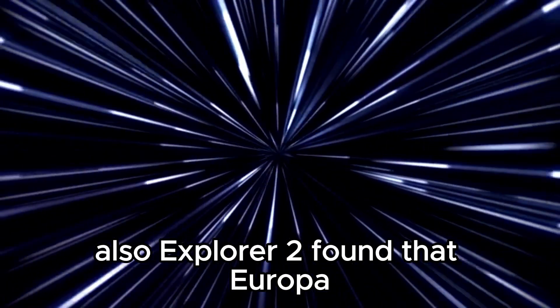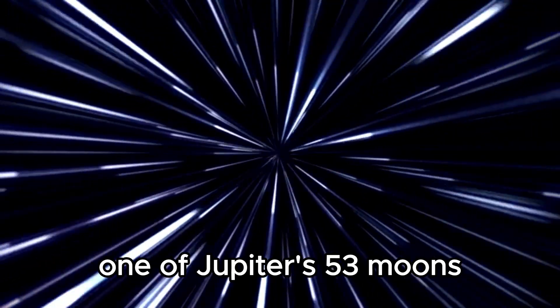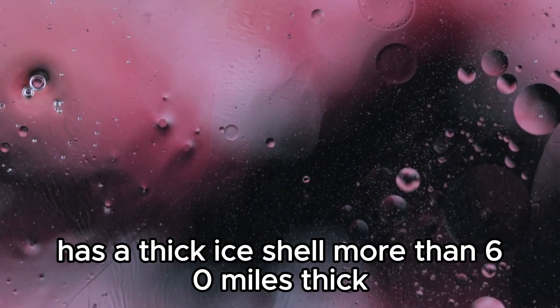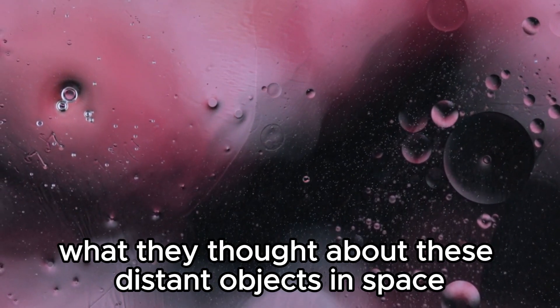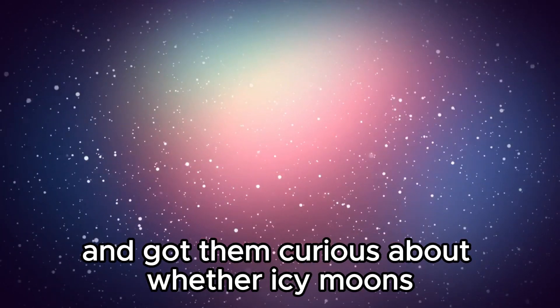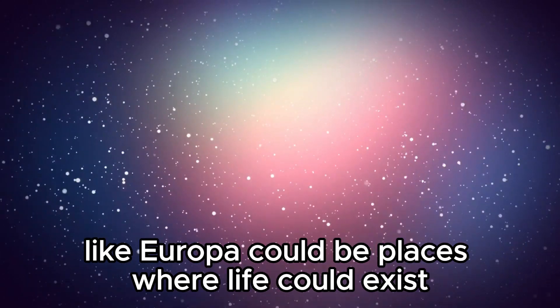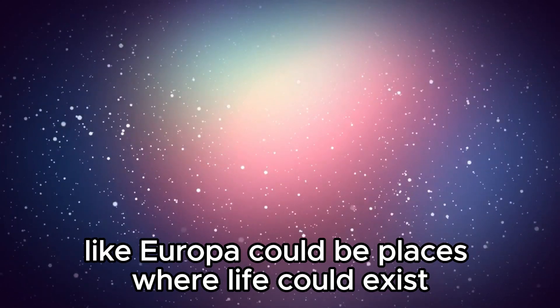Also, Explorer 2 found that Europa, one of Jupiter's 53 moons, has a thick ice shell more than 60 miles thick. These revelations made scientists rethink what they thought about these distant objects in space and got them curious about whether icy moons like Europa could be places where life could exist.